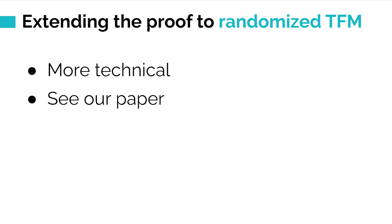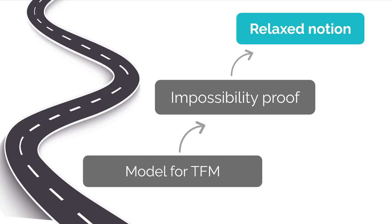In our paper, we also extend the proof to randomized transaction fee mechanisms, though the proof is more technical. For the rest of the talk, I want to discuss something more philosophical: how do we interpret this impossibility? Is this the end of the world? I'll talk about some relaxed notions — I don't know if this is the final answer we want, but I think it's a meaningful first step.